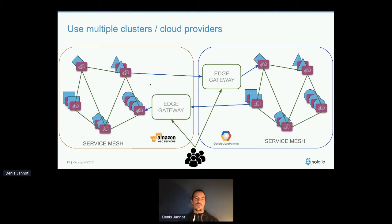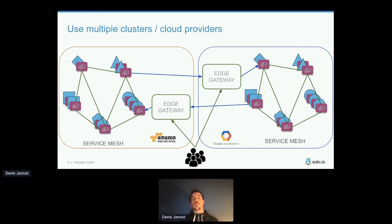First, you need to federate identity. By default, in a single cluster, services communicate with mTLS using certificates they can validate. But when a service wants to communicate with a service in another cluster, it can't validate the identity by default because the certificates were signed by different control planes.